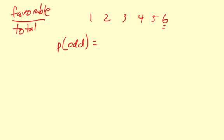So the number of odd possibilities, there's one, three, five, so three out of a total of six, and that could be simplified to one-half.